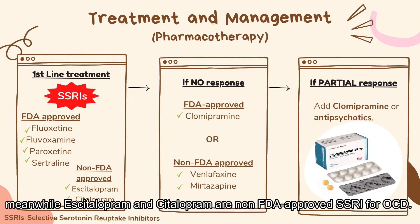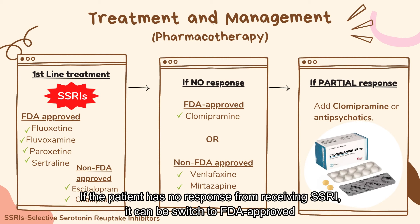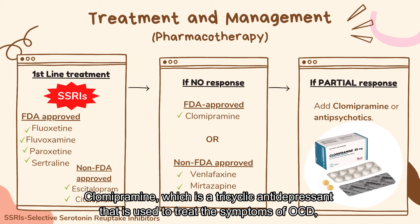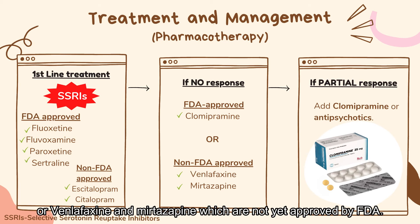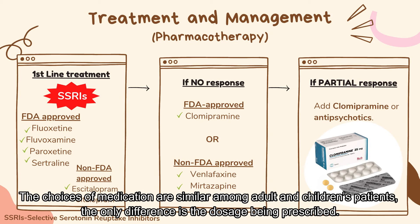Meanwhile, escitalopram and citalopram are non-FDA-approved SSRIs for OCD. SSRI should be continued for 8 to 12 weeks, including 4 to 6 weeks with maximally tolerated doses. If the patient has no response from receiving SSRI, it can be switched to FDA-approved clomipramine, which is a tricyclic antidepressant used to treat OCD symptoms, or venlafaxine and mirtazapine, which are not yet approved by FDA. If the patient only has partial response from SSRI, the treatment may be added with clomipramine or antipsychotics. The choices of medication are similar among adult and children patients, with the only difference being the dosage prescribed.